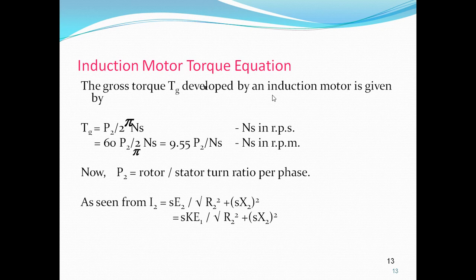The maximum torque is also known as breakdown torque and pullout torque. Beyond this point the torque is not sustained and the motor will not run.